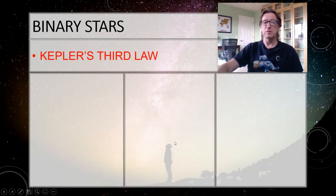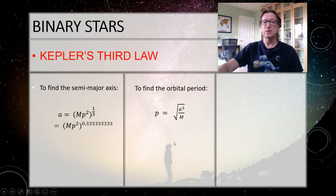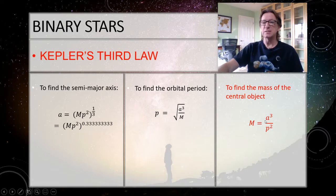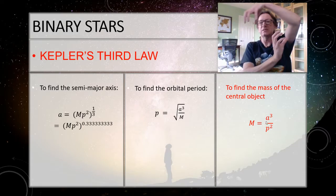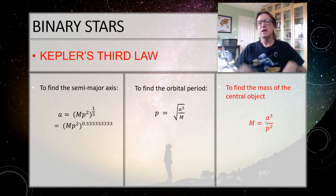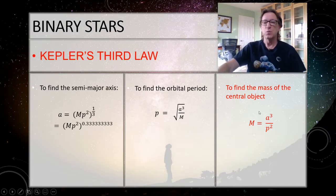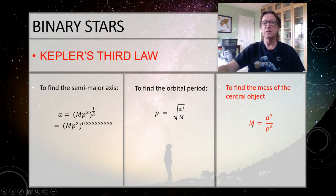There are three different things we can find using Kepler's third law. The one we want is the mass of the central object. That means we need two things: the semi-major axis of the orbit — which ends up being the distance between the two stars — and the period, meaning how long it takes for the stars to go around each other. Once I know those two, I can find the total mass, and then one more step gives me the individual masses.